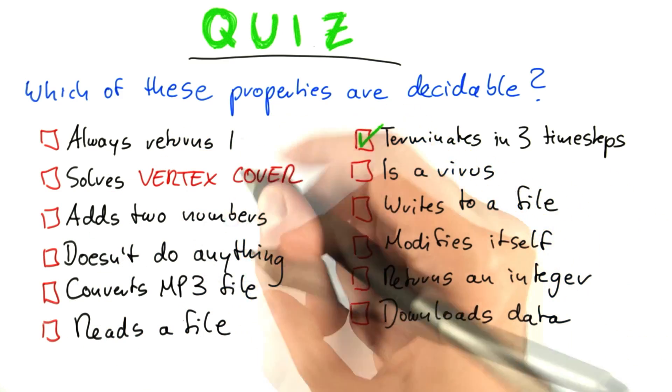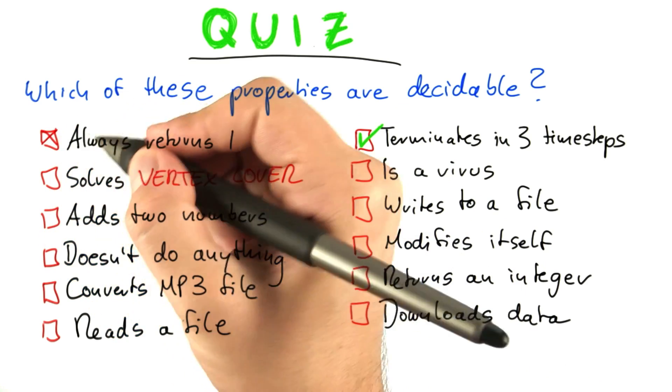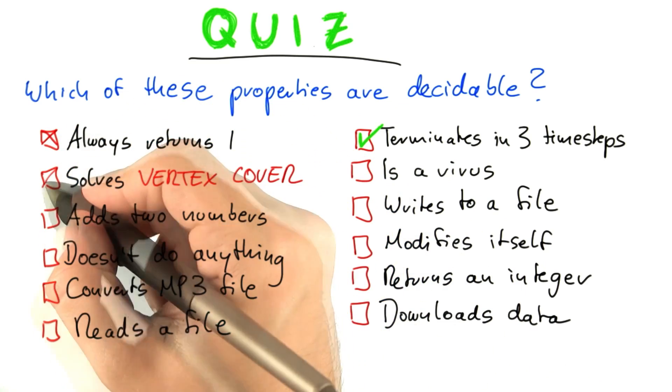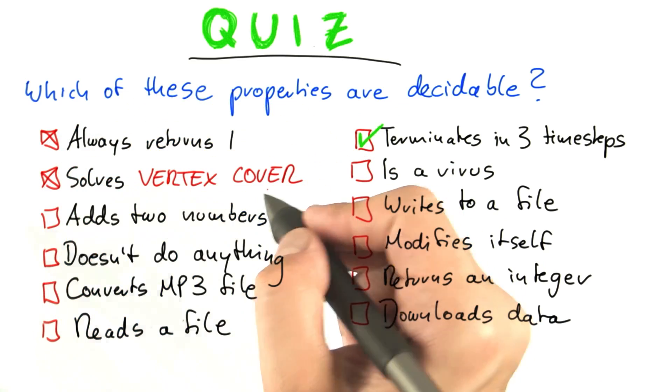So 'always returns one' — that is undecidable by Rice's theorem. It's a similar case here, we already had that.